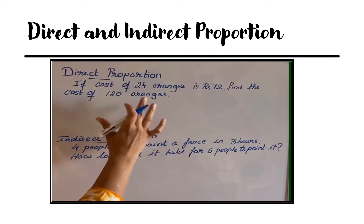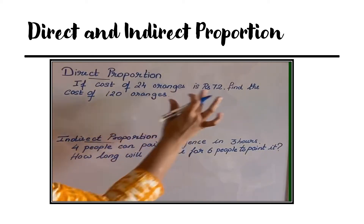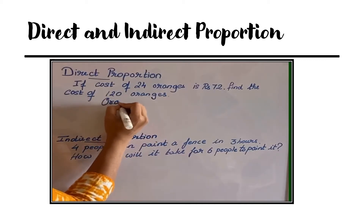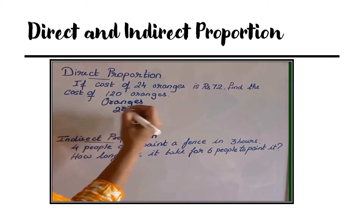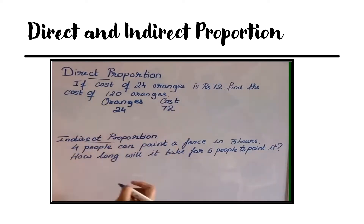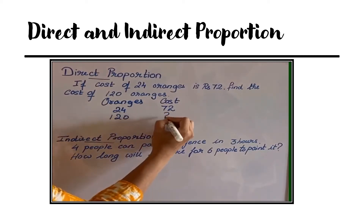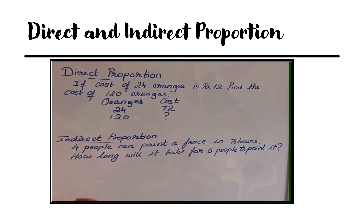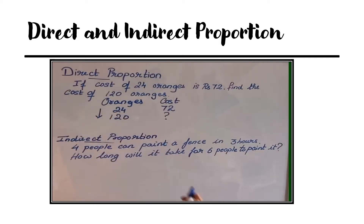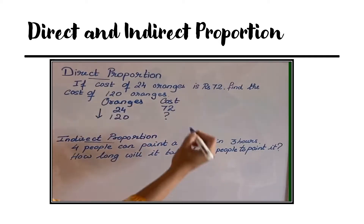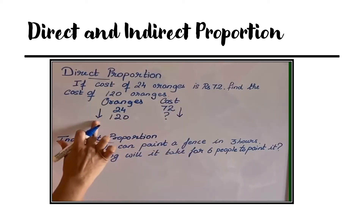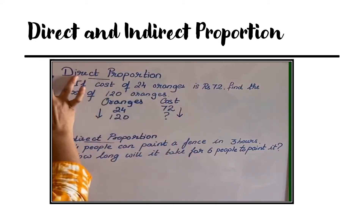Here we can see an example. If the cost of 24 oranges is 72, then find the cost of 120 oranges. The number of oranges at first is 24 and the cost is 72. The number of oranges increased from 24 to 120. So if the number of oranges increases, the cost required to buy those oranges also increases — one increases, the other also increases. This is direct proportion.